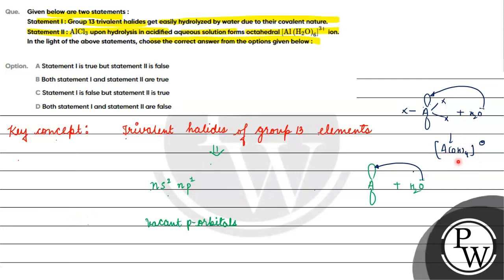We make a tetrahedral species A(OH)4^-. So statement 1 is correct. Trivalent halides easily hydrolyze. What is the reason? It has a vacant orbital. Due to their covalent nature, this statement is also correct.